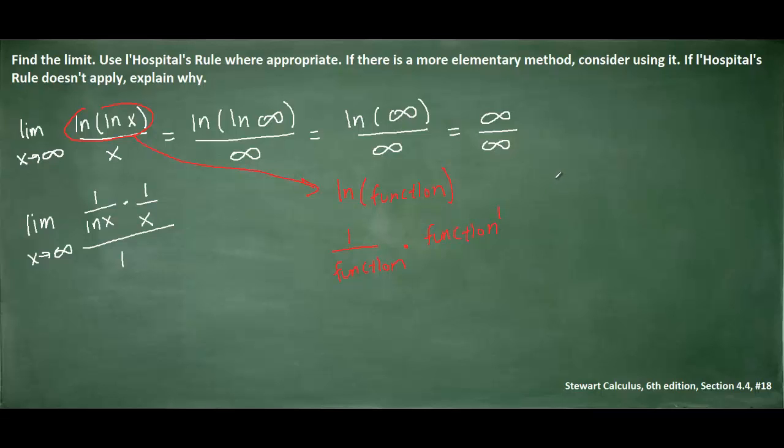So in our example we had the natural log of the natural log of x. The natural log of x would be our function, so to speak. So the derivative would be 1 over that function, and then you have to multiply by the derivative of that function. The derivative of the natural log of x with respect to x is 1 divided by x.